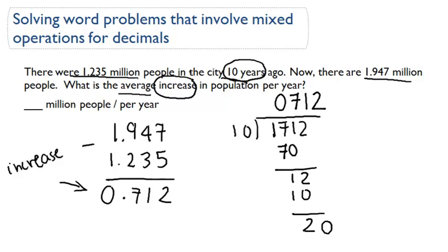And then my final answer, so now I'm going to bring this decimal point up here. My final answer is 0.0712 million people per year.